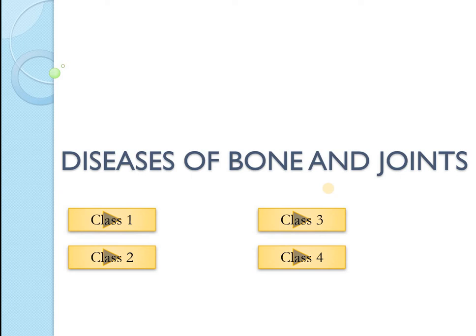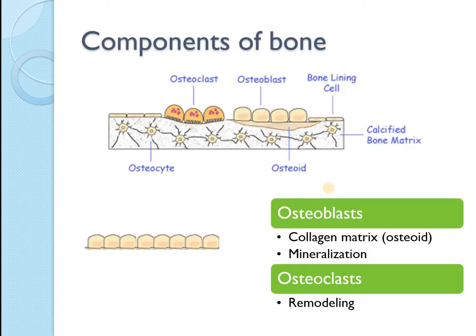We are talking about the diseases of the bone and the joints. Let's have a look at the components of bone first in brief. The bone is the hard tissue of the body which is a calcified bone matrix containing some cells. It's a live tissue.